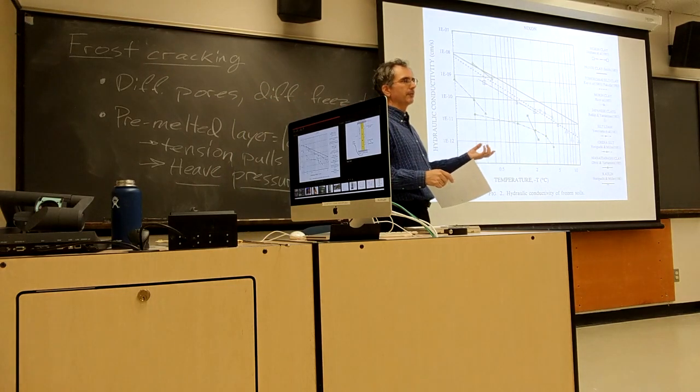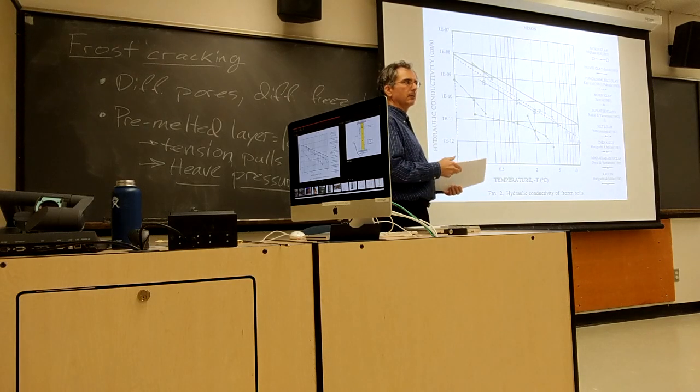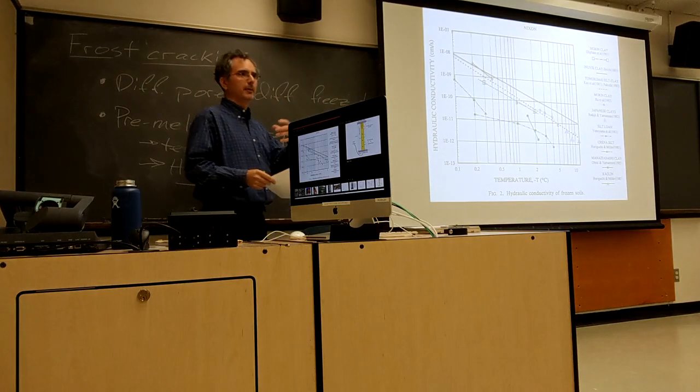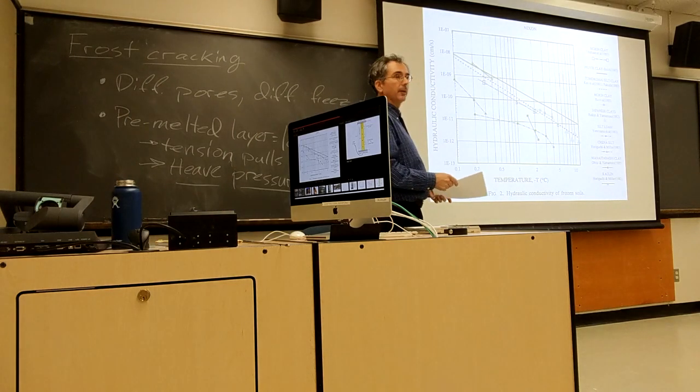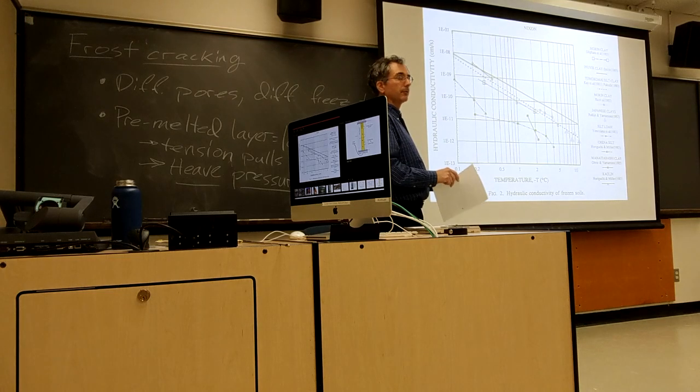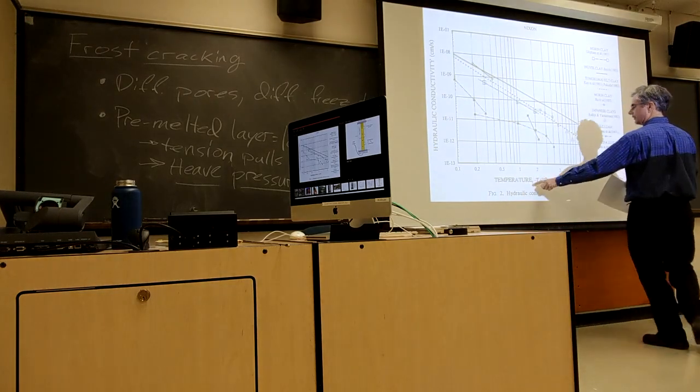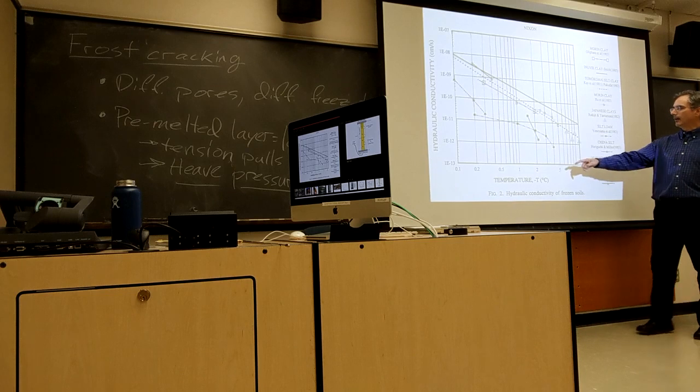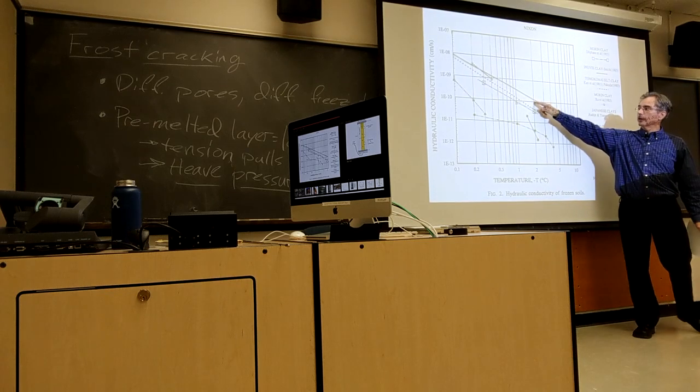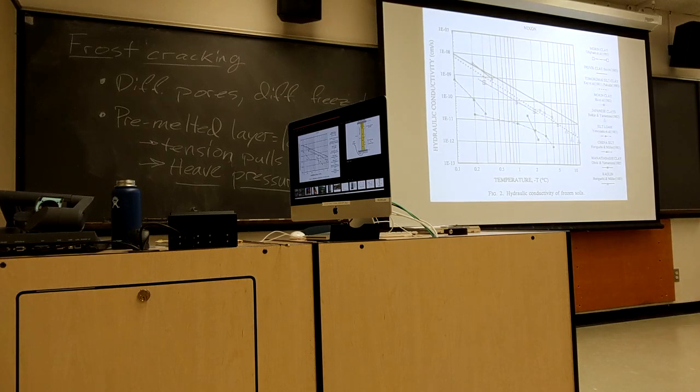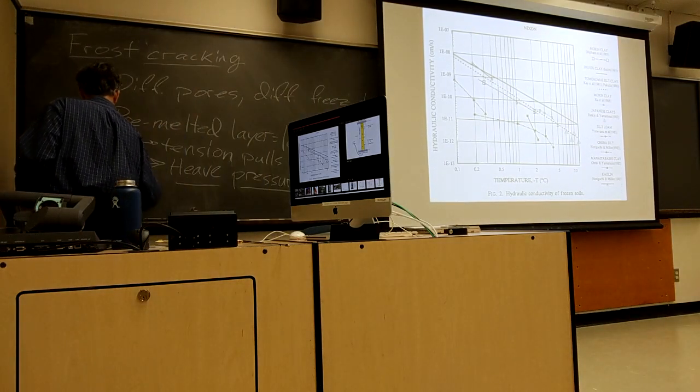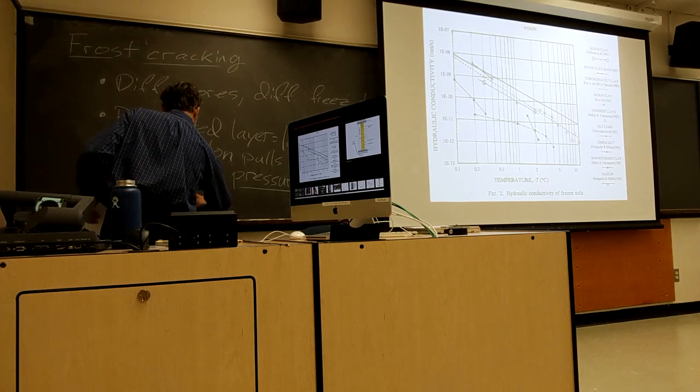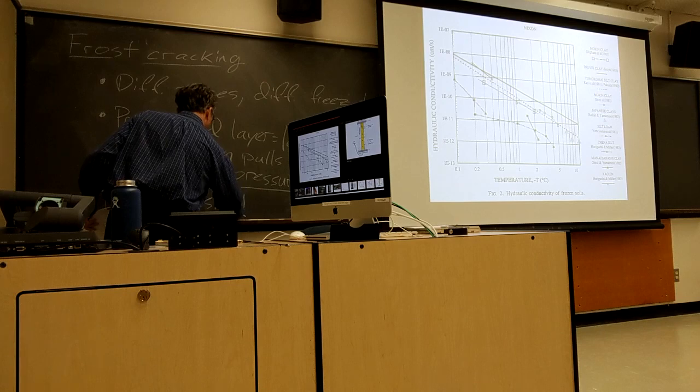And so as we go from, say, this is again a minus T scale here. As we go from, say, minus 2 to minus 10, our hydraulic conductivity drops by an order of magnitude. So, you know, that's a lot, that's kind of a big change. So the heave pressure is enough to break the rock. But you get a sweet spot between that increasing pressure as you get colder and colder, and the decreasing hydraulic conductivity as you get colder.